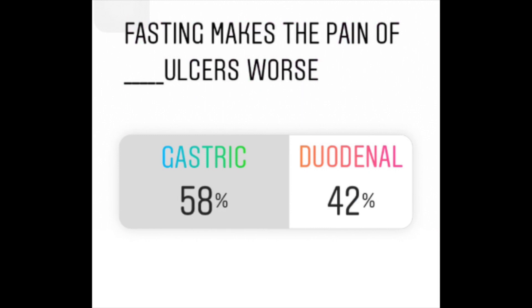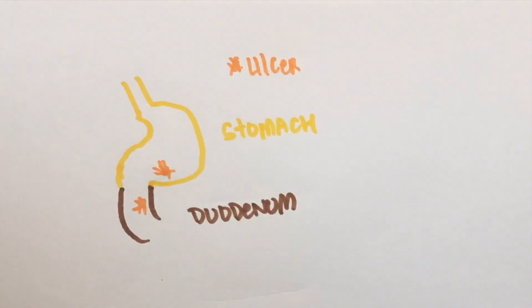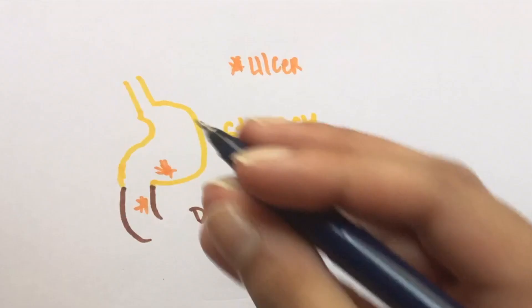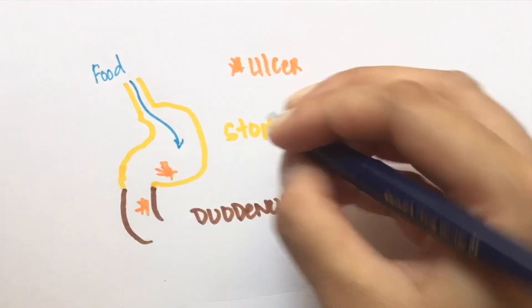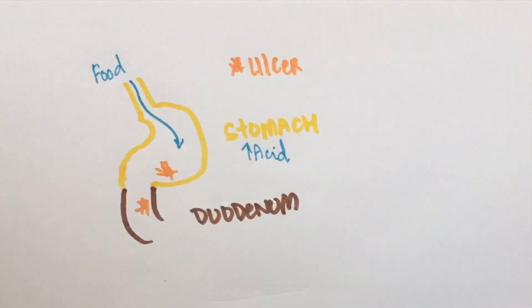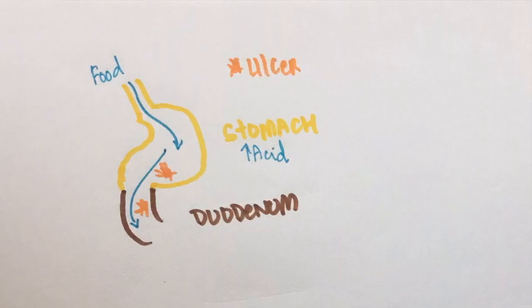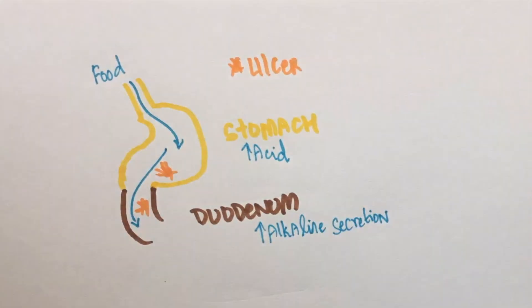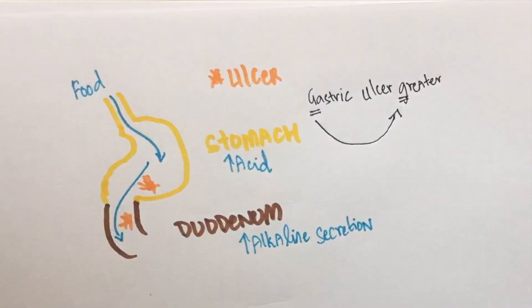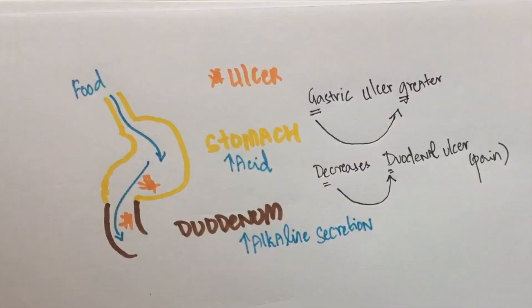Fasting makes the pain of dash ulcers worse. This is a gastric ulcer and this is a duodenal ulcer. Keep in mind that acid makes ulcers worse. When we eat food, there is acid secretion by the stomach. On the other hand, when food enters the duodenum, there is alkaline secretion there. This is why food makes the pain from a gastric ulcer greater, and duodenal ulcer pain decreases with food.